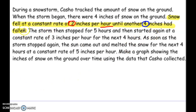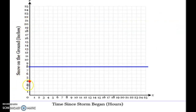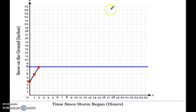So the next part: snow fell at a constant rate of two inches per hour until another four inches had fallen. With this method, we're going to count that slope from the last point to the new point. The inches are over here on the right, and if you go from four to another four inches, that's eight. So we count until we get up to eight inches of height. It said two inches per hour, so you go up two and over one, up two and over one, until you get to eight, then you stop.